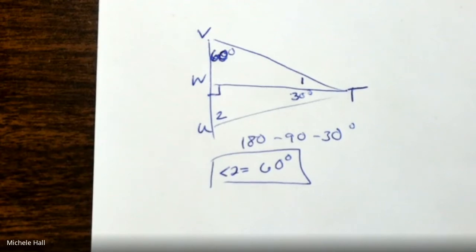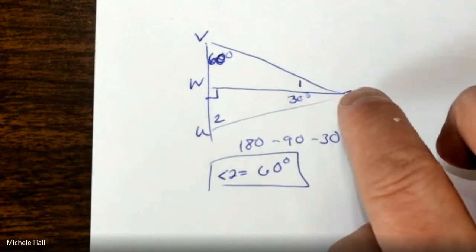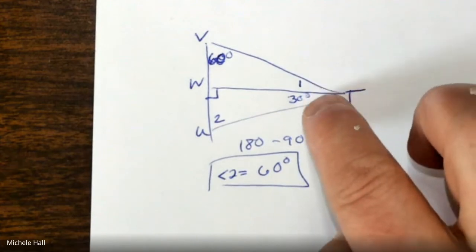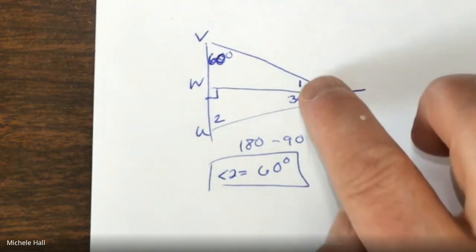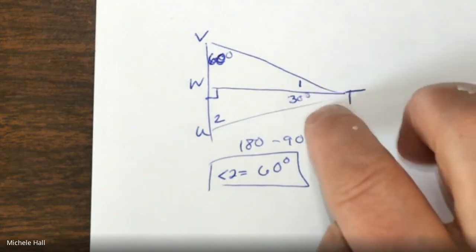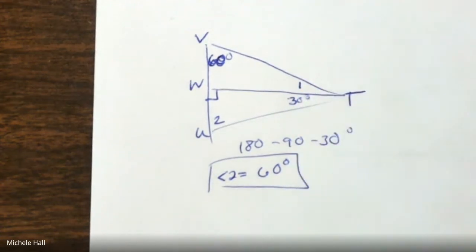There are no markings that told me anything's cut in half. They would have two half circles here if it was cut in half, but I don't see that, so I can't assume it.